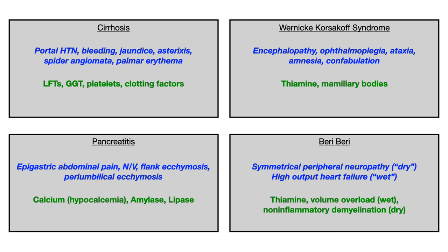For pancreatitis labs, they'll give you amylase and lipase, but what they could give you just by itself is a calcium level — hypocalcemia is what you want to look for. For beriberi: dry beriberi is symmetrical peripheral neuropathy, and wet beriberi is high output heart failure. Labs would show a thiamine level, or a picture of volume overload for wet, or non-inflammatory demyelination for dry beriberi. For dilated cardiomyopathy, you'll see symptoms of systolic heart failure, a systolic murmur, S3 heart sound, and on imaging dilated ventricles, ballooning of the heart, or a bundle branch block.